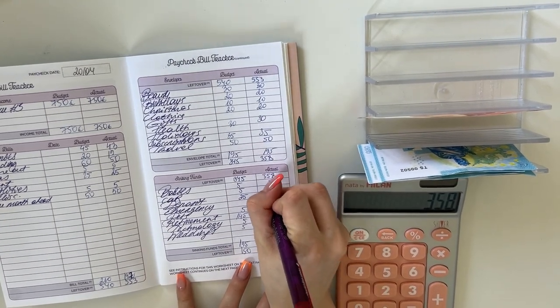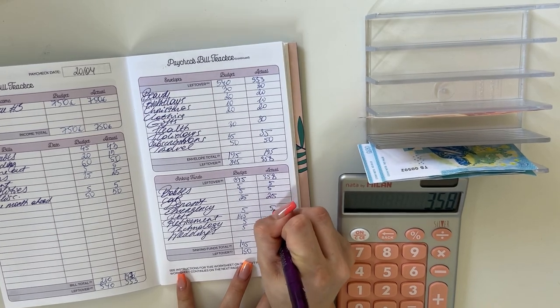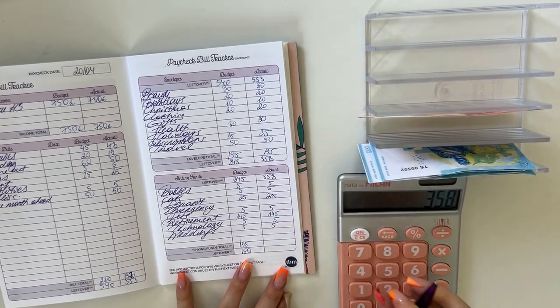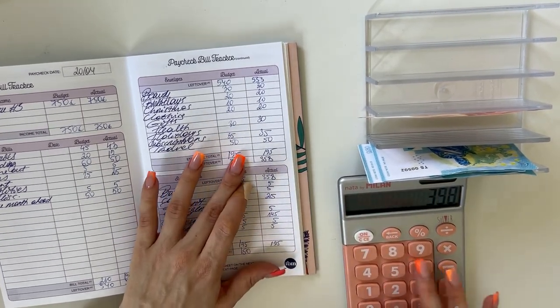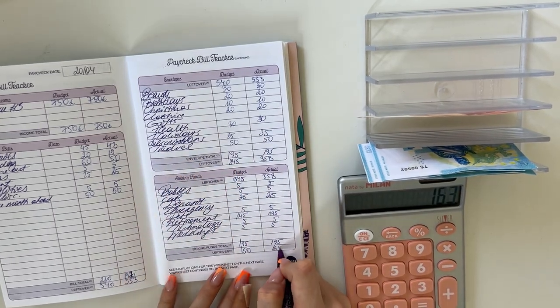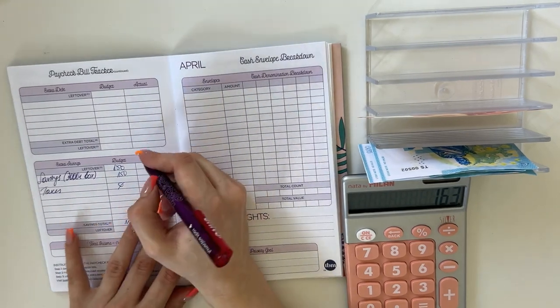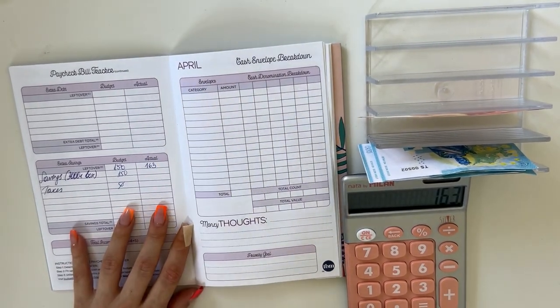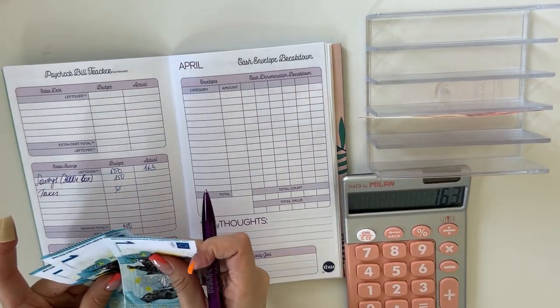$5 went into babies, $5 into car, $25 in deposit, $5 in pets, $145 in retirement, and $5 in technology and weddings each. That was $195 again, so $358 minus $195 is $163. So that we bring here to our savings, $163.